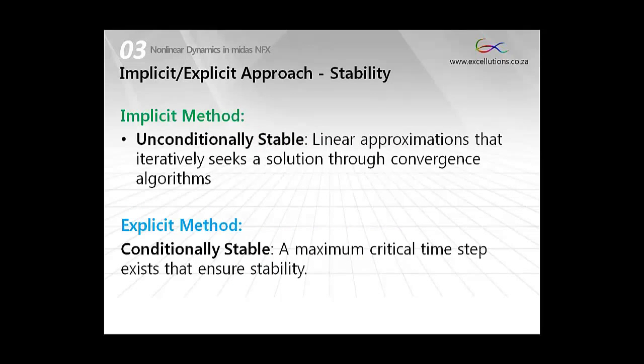We have to talk about stability when we talk about implicit and explicit FEA. The implicit method is unconditionally stable. Because it uses linear approximations, it will look for a solution iteratively by using convergence algorithms. The explicit method is conditionally stable, which means it can only be stable if we use time steps that is actually shorter than a critical time step.